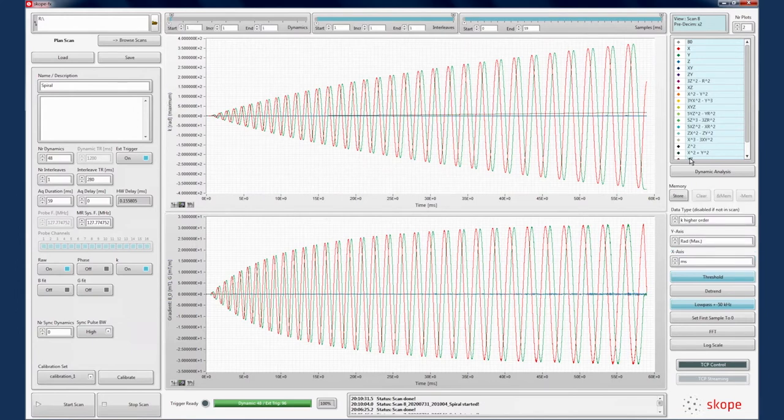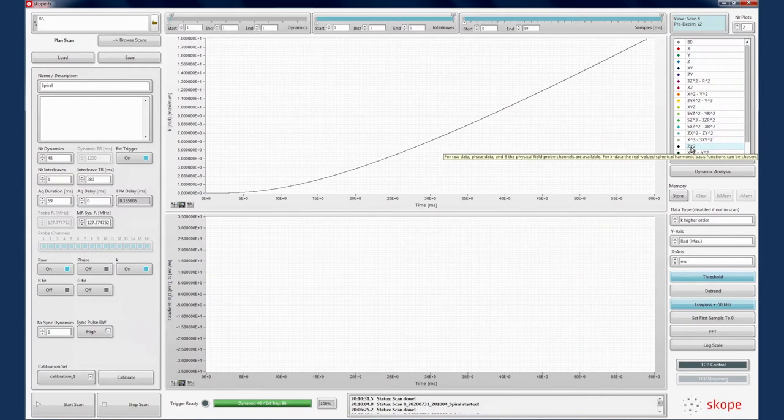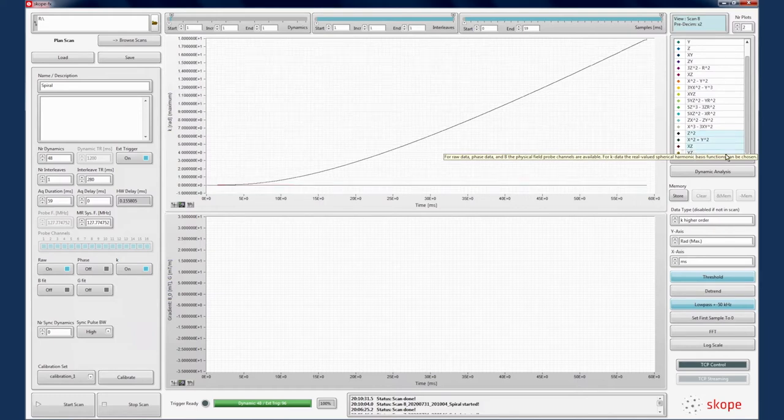Let's take a look at the phase accrual of the z-squared concomitant field term. Notice that the term increases with the length of the spiral, meaning that this term will have detrimental impacts on high resolution spiral imaging.